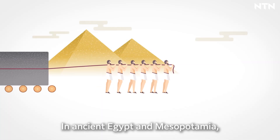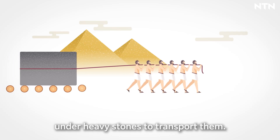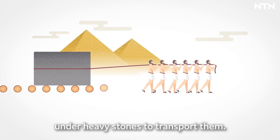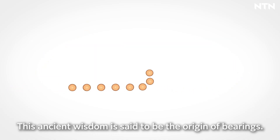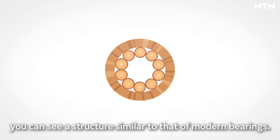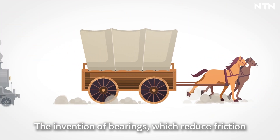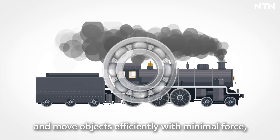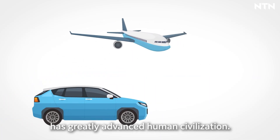In ancient Egypt and Mesopotamia, it is said that logs were placed under heavy stones to transport them. This ancient wisdom is said to be the origin of bearings. By arranging logs in a circle, you can see a structure similar to that of modern bearings. The invention of bearings, which reduce friction and move objects efficiently with minimal force, has greatly advanced human civilization.